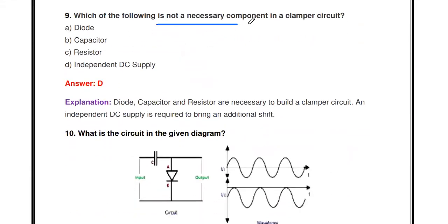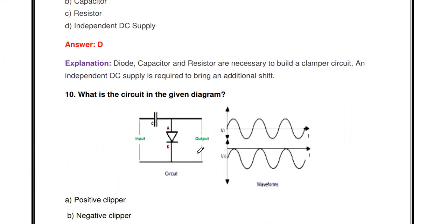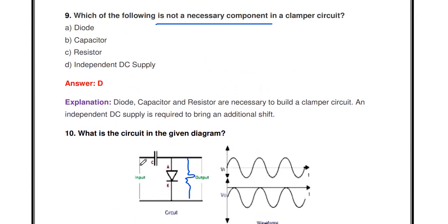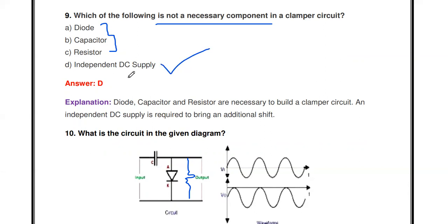Next question: Which of the following is NOT a necessary component in a clamper circuit? A simple clamper circuit uses a capacitor, a diode, and a resistor. These three are necessary. An independent DC supply is not needed — it may be used optionally for reference voltage. So the answer is: independent DC supply.